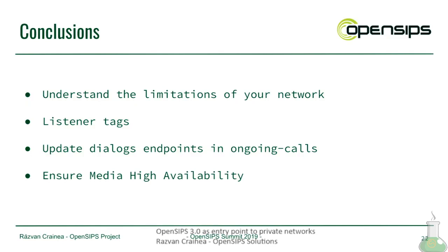The conclusions for this talk: you have to understand the limitations of your network because most of the time there are limitations. You have to know whether to use listener tags or rely on plain VRRP to move IPs between instances. You have means to update dialog endpoints inside a live call. And using OpenSIPs 3.0 you can ensure media RTP high availability — all of this using the single DLG send sequential command.